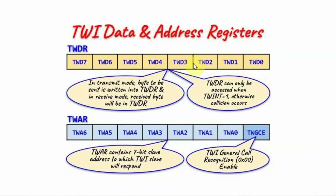Next we have the data register. In transmitter mode, this register contains the byte to be sent. In receiver mode, this register receives the byte from the slave device. Keep in mind that this register can only be accessed when the interrupt bit is set; otherwise, a collision will occur.